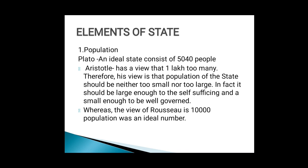Different philosophers have addressed this. The philosopher Plato says that an ideal state consists of 5,040 people. The second philosopher, Aristotle, has the view that one lakh is too many. His view is that the population of the state should be neither too small nor too large.